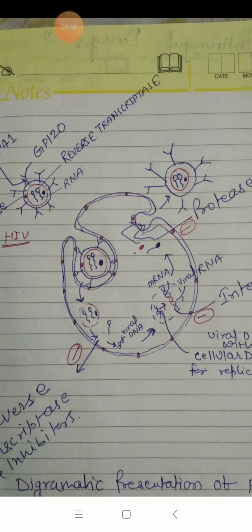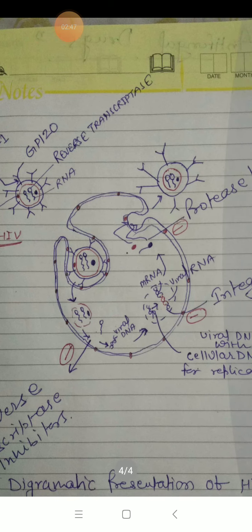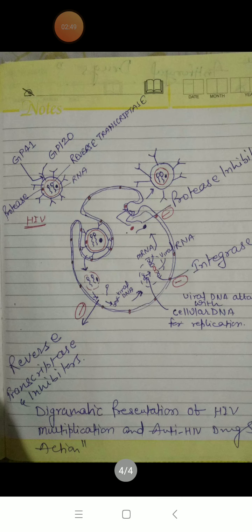the genetic material with the help of reverse transcriptase is converted into DNA — viral DNA. This viral DNA, with the help of integrase enzyme, attaches to the host DNA. The viral DNA along with the host DNA is replicated and forms a number of HIV virus particles.